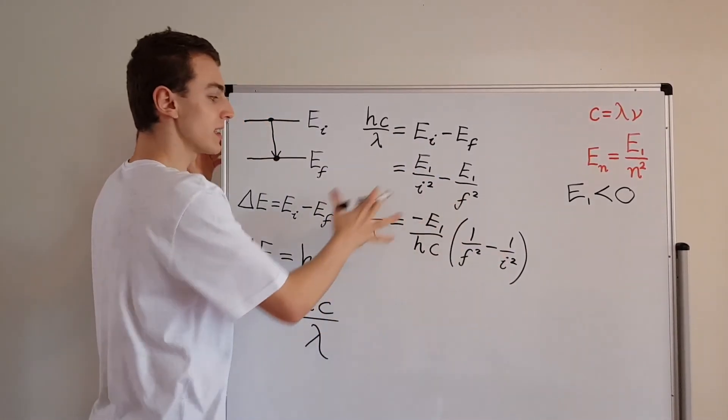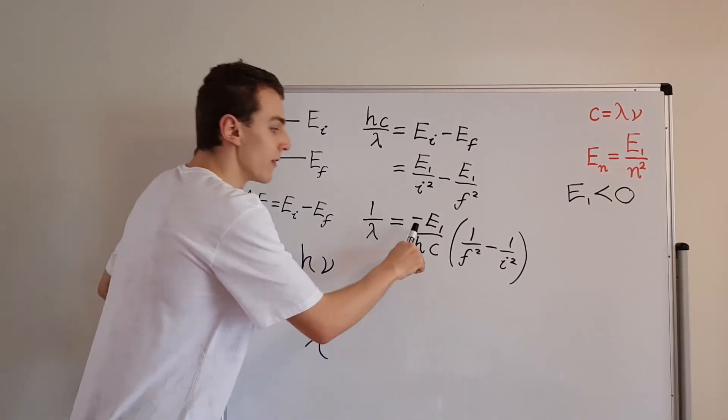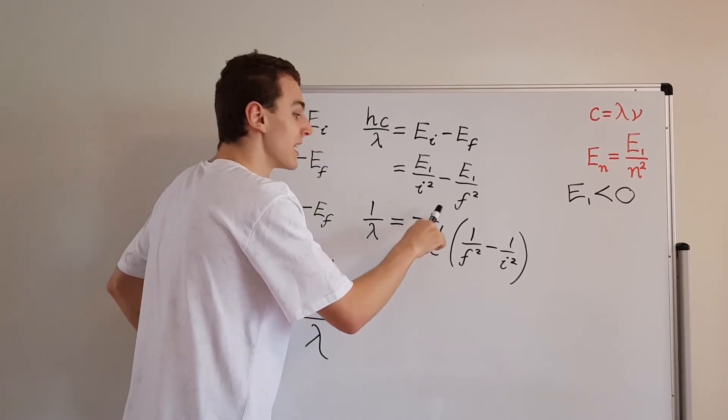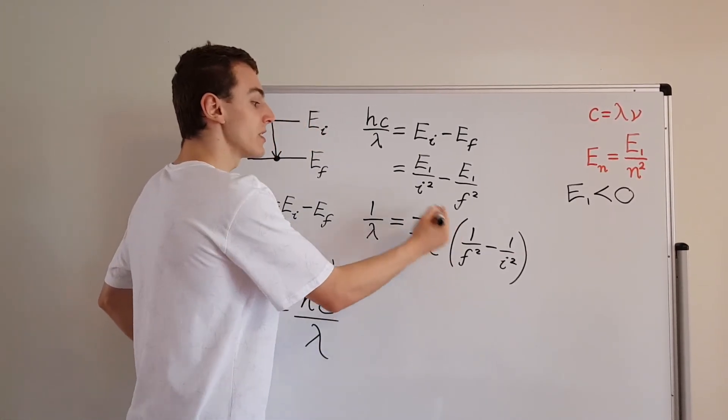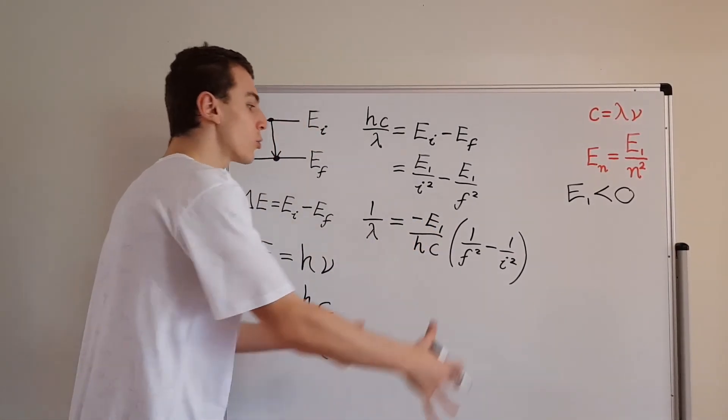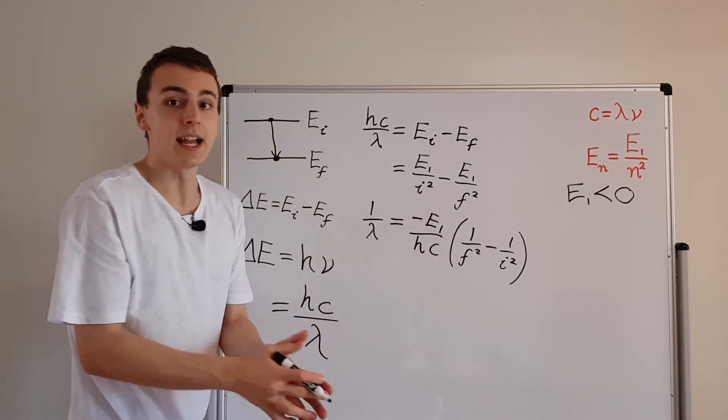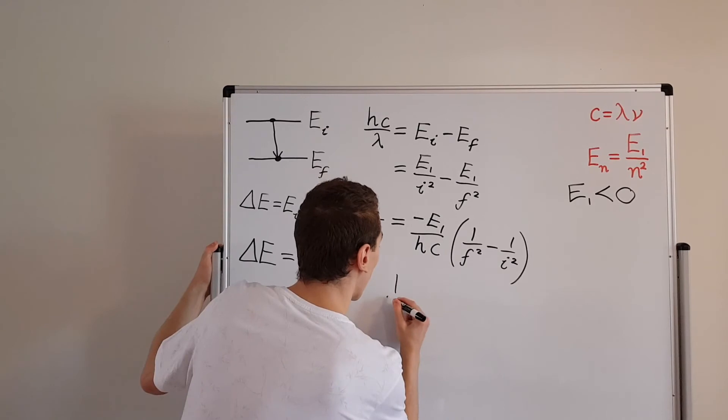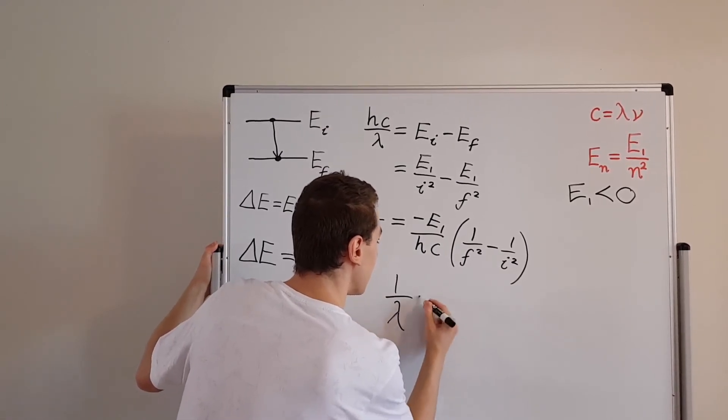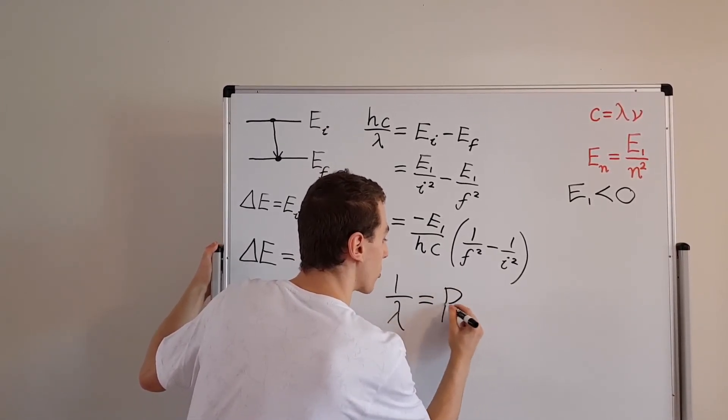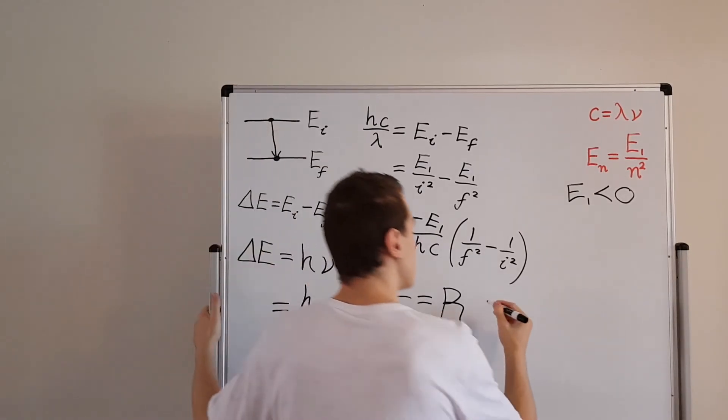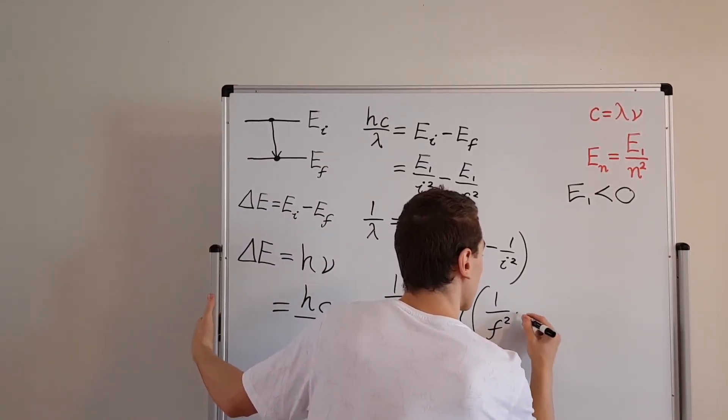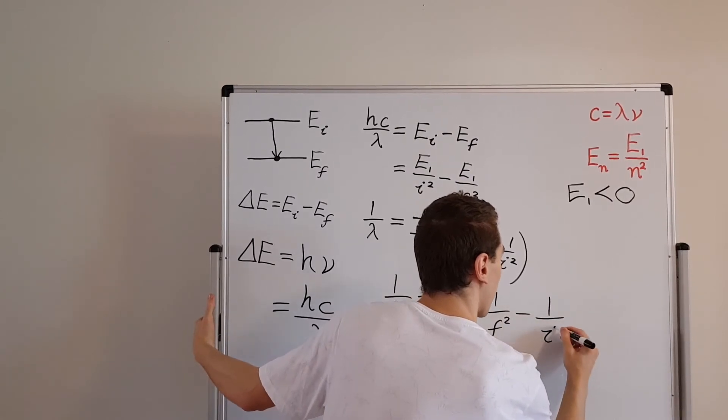So we have this expression over here. So this over here is a minus. So this looks like a negative number, but it's actually not, because we have a minus times a negative number. That's going to give us a positive number. We can group all of these guys together into one constant. What we can actually see is that 1 over lambda is equal to some constant, which we'll call capital R, times this little mess over here, 1 over f squared minus 1 over i squared.